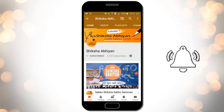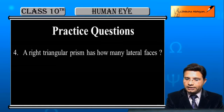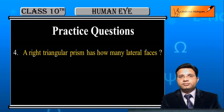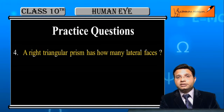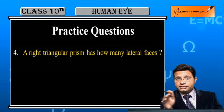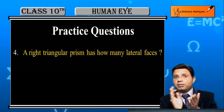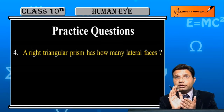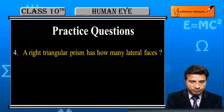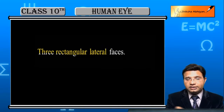Question number four: a right triangular prism has how many lateral faces? Lateral faces are those through which actual refraction takes place. The triangular base has how many lateral faces? The answer is three rectangular lateral faces.